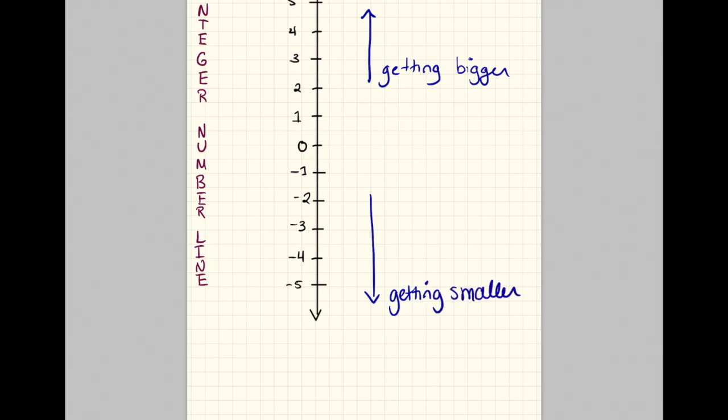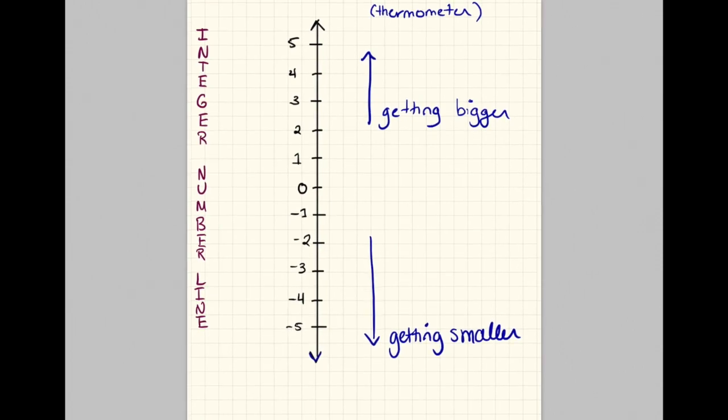And also, I know that I finish at 5 and negative 5, but of course, there's these arrows here. So I hope that you understand that it's all the way to infinity. And in this case, it's all the way to a positive infinity and all the way to a negative infinity.